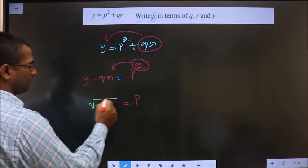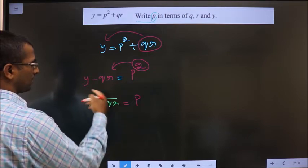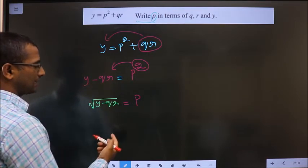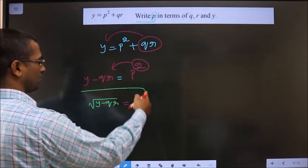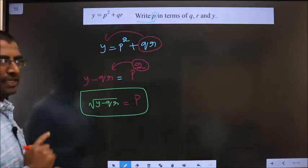So, leaving you with square root of y minus qr. You get square root on this entire thing. So we have made p the subject.